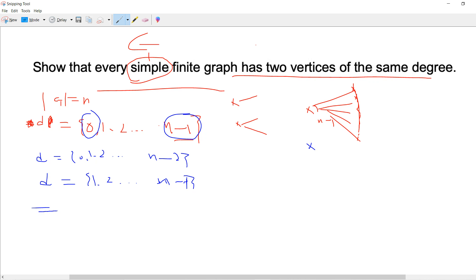So the number of the total possibilities is only n minus 1. For each case, it's n minus 1. But we total have n points. So we have n vertices, and then we try to put these n vertices into n minus 1 containers.